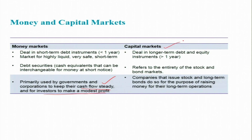Capital markets deal in long-term debt and equity instruments — that is, greater than one year. All transactions involving debt and equity instruments for more than one year are called capital markets. It refers to the entirety of the stock and bond markets. Companies issue stocks and long-term bonds to raise money for long-term operations, borrowings, and investment. For example, a company issuing IPOs is part of the capital market.